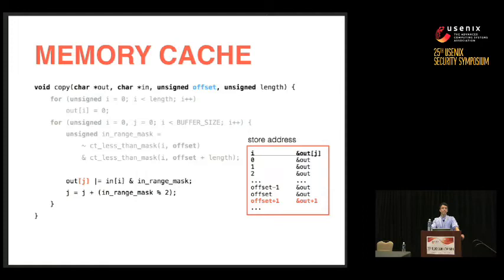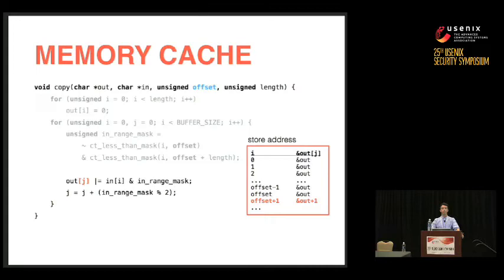But this code is still vulnerable. The attacker can still learn the value of offset from loads and stores even if the path is independent of the secret. The store to out[j] goes to the same address — the beginning of the array — for i equals zero through offset. Once j increments, we store to out plus one, then out plus four or out plus eight depending on cache line size. The attacker can learn information about offset just from measuring cache hits and misses on memory accesses.